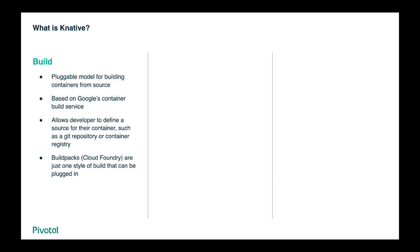Builds in Knative are designed to be a pluggable model for defining how to go from source code to container. Builds are run on the Kubernetes cluster using a predefined build template that outlines how to piece everything together. These build templates are shareable and currently are already made up of prevalent solutions today, including Cloud Foundry build packs.